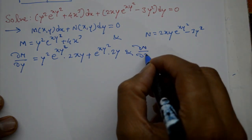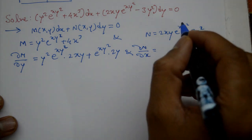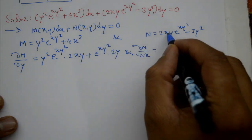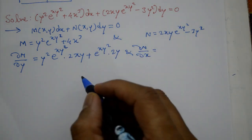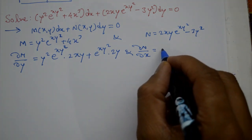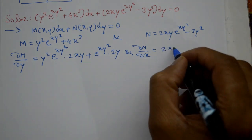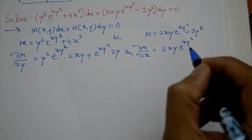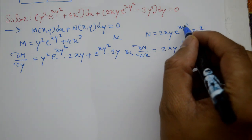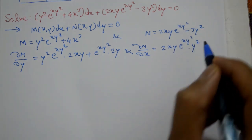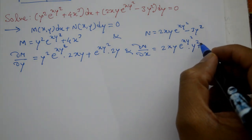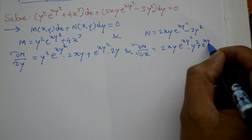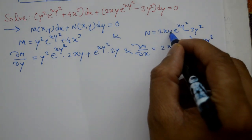Now differentiate N with respect to x — y treated as constant. 2y constant hai, x into e^(xy²) karenge. 2x ko as is lete hain, e^(xy²) differentiate karenge: e^(xy²) into x y² karenge — x becomes 1, y² remains, into y². Plus e^(xy²) aega — 2y constant aega, x becomes 1, e^(xy²) aega.